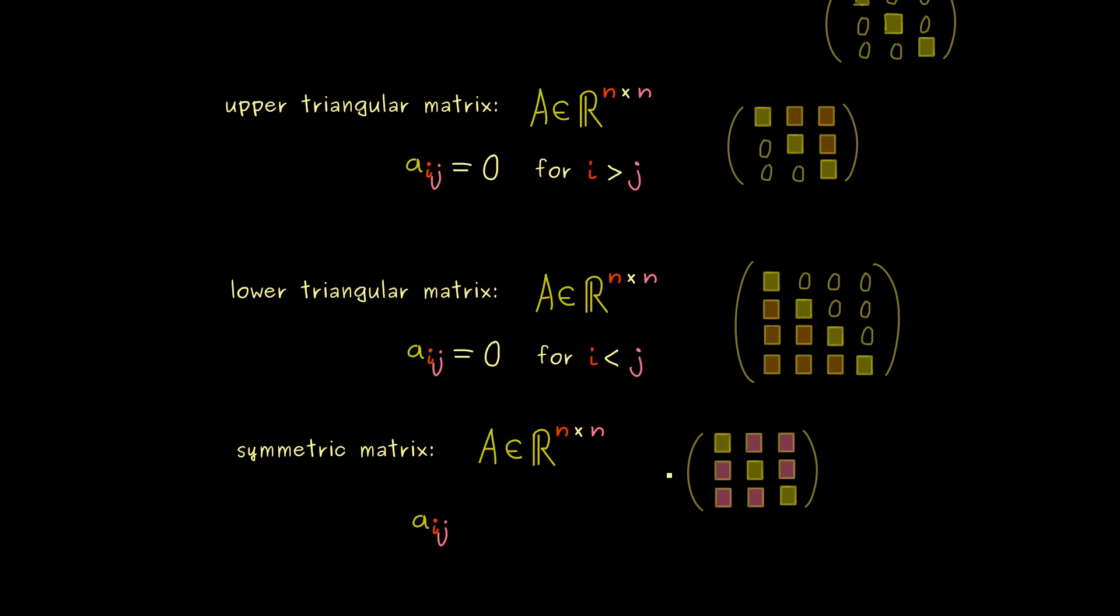In other words for a symmetric matrix it's possible to exchange the index for the row with the index of the column. Therefore you see it's important that we have a square matrix such that the number of rows coincides with the number of columns.